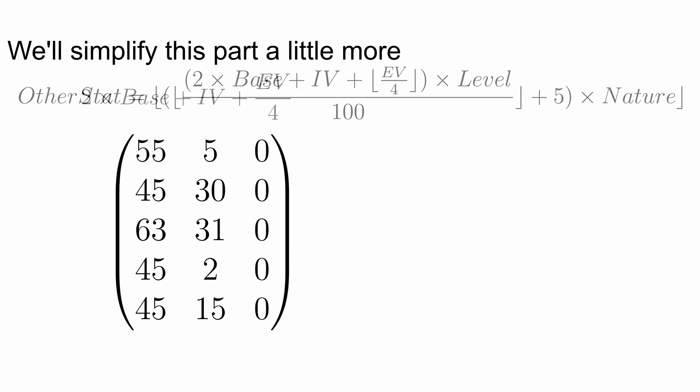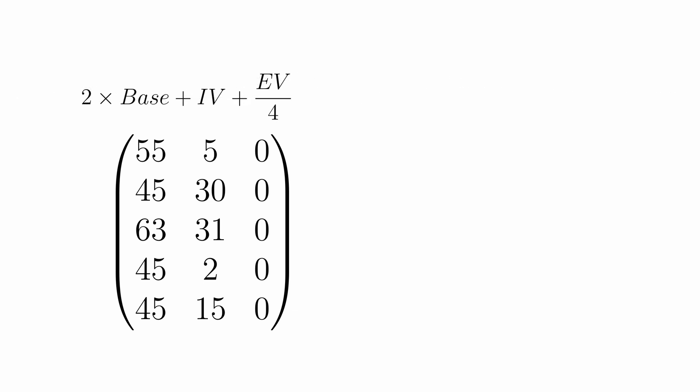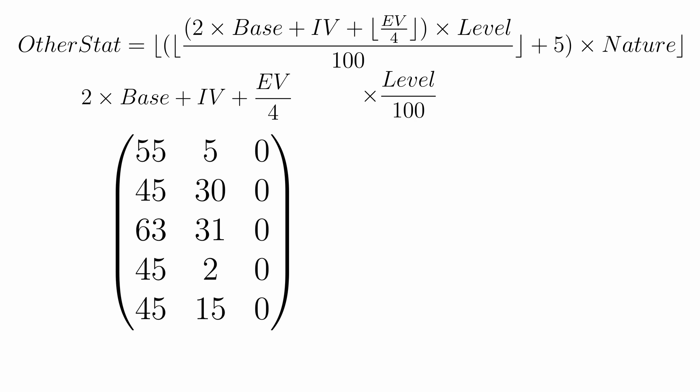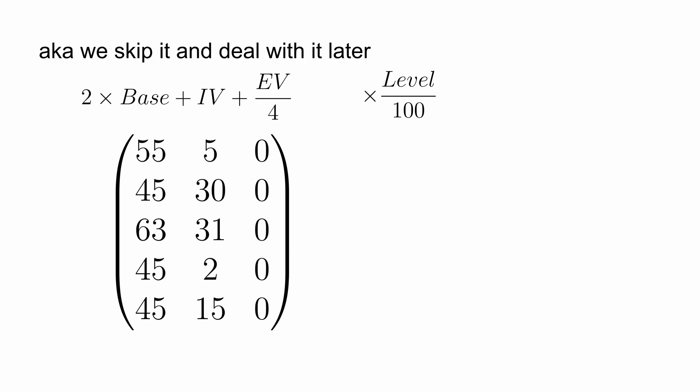For our stats, we want to multiply the base by 2, add the IVs, and then the EVs divided by 4. Afterwards, we multiply by level over 100, which is simply a scaling factor. But we can deal with that afterwards.